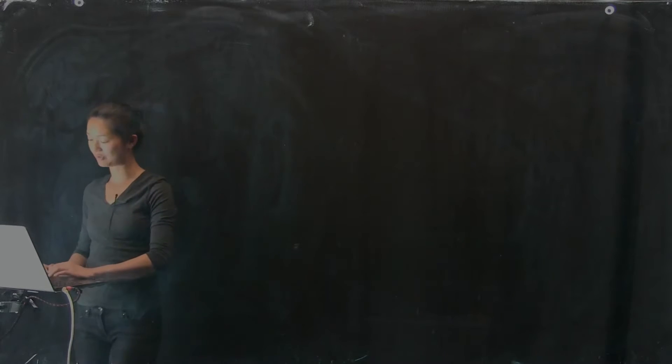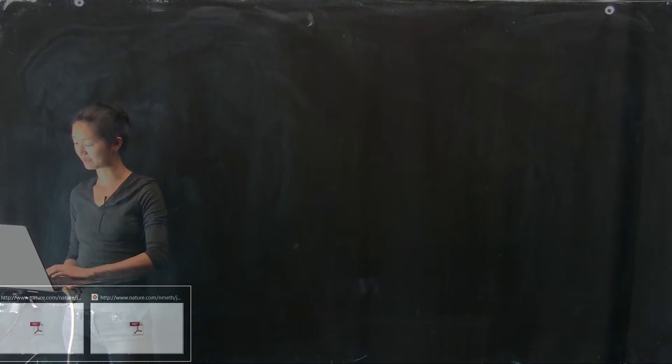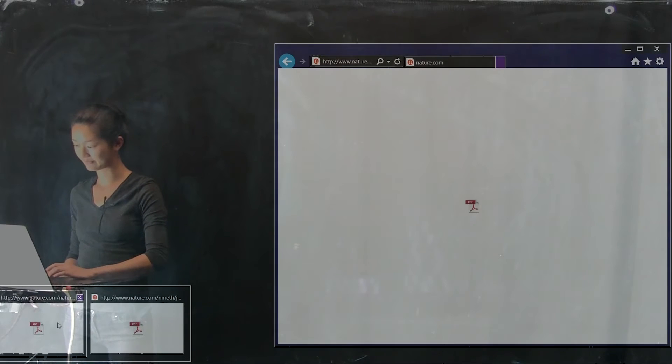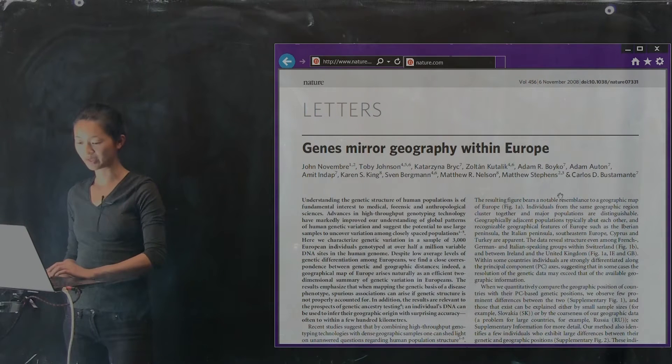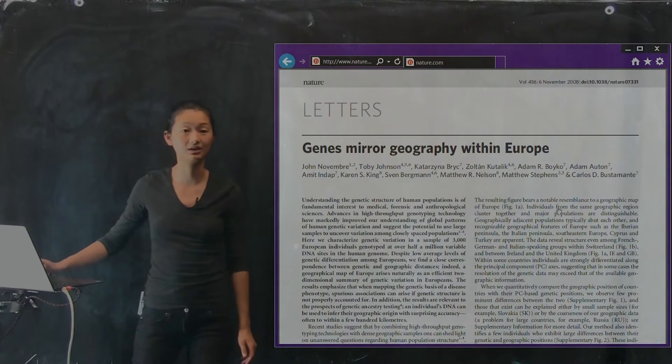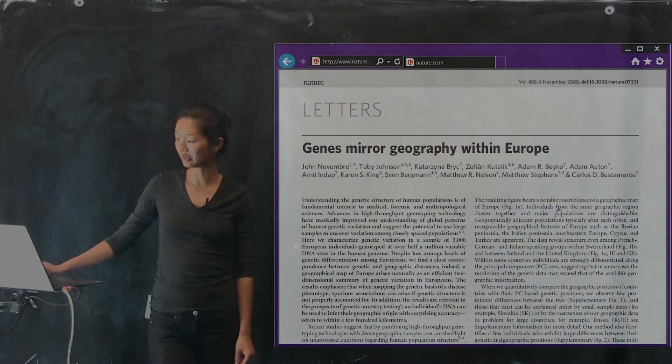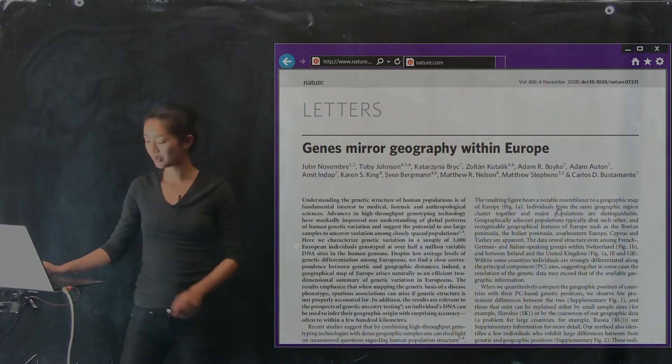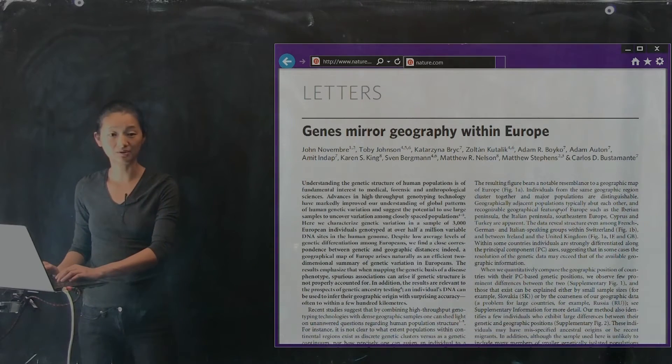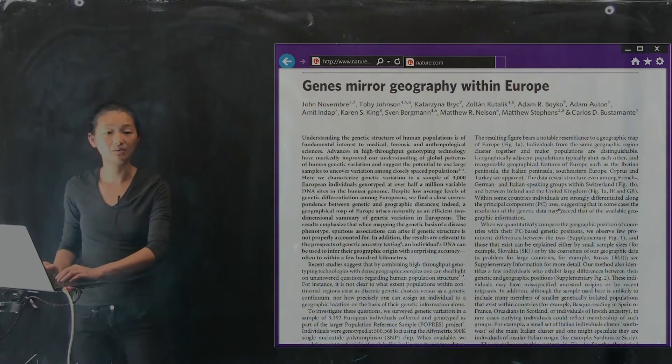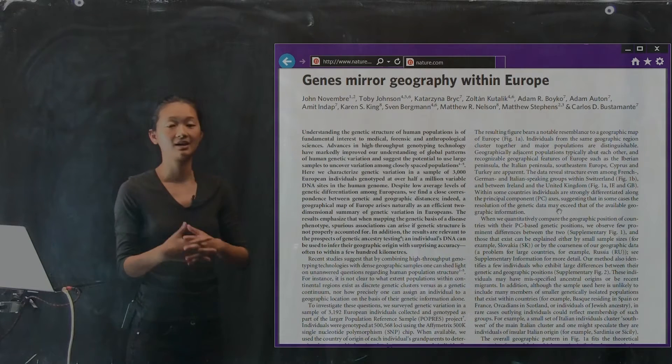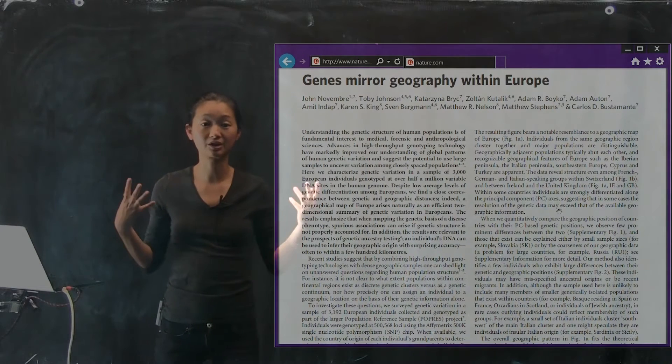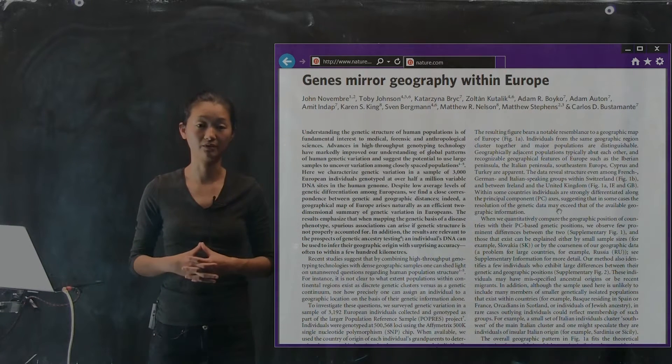So the first one I'm going to show you is a paper that was published with John Novembres as the first author back in 2008. And the title of the article is Genes Mirror Geography Within Europe. So in this research article, what they did was they collected genotypes of a large number of individuals of European ancestry.